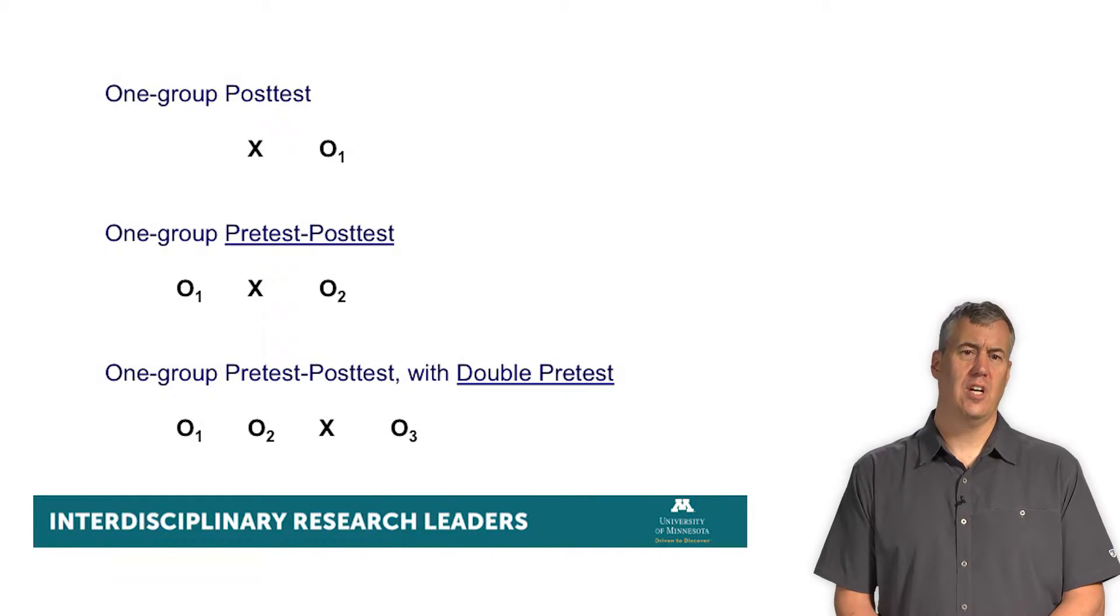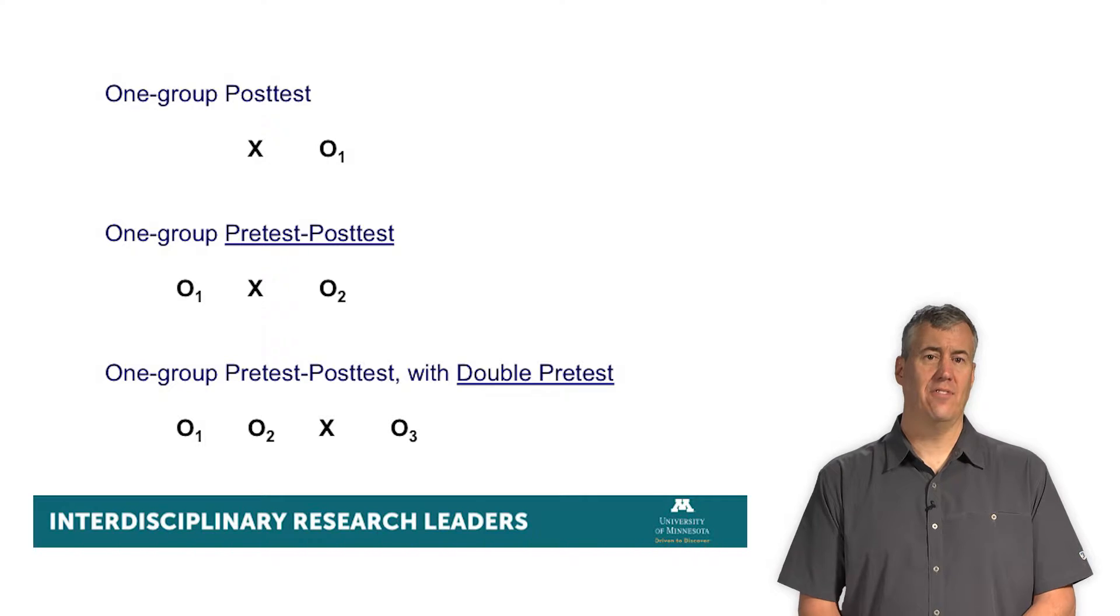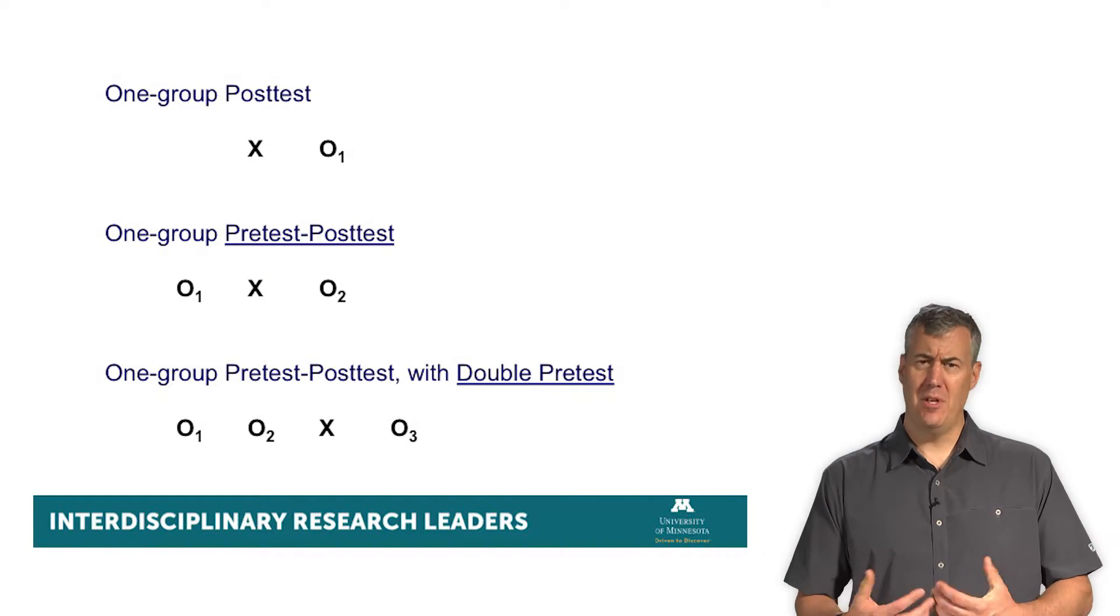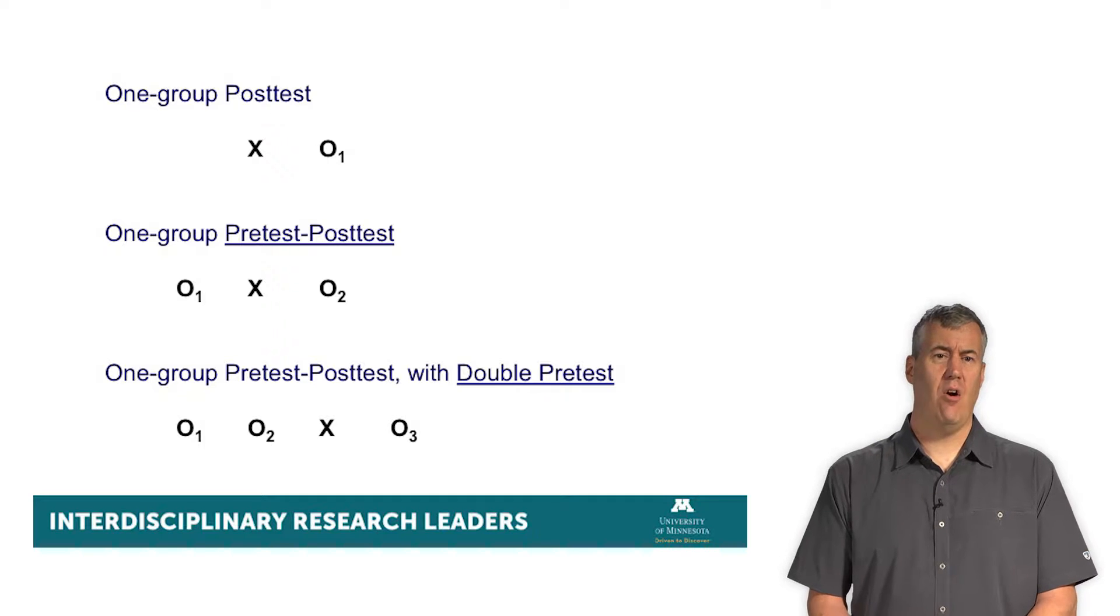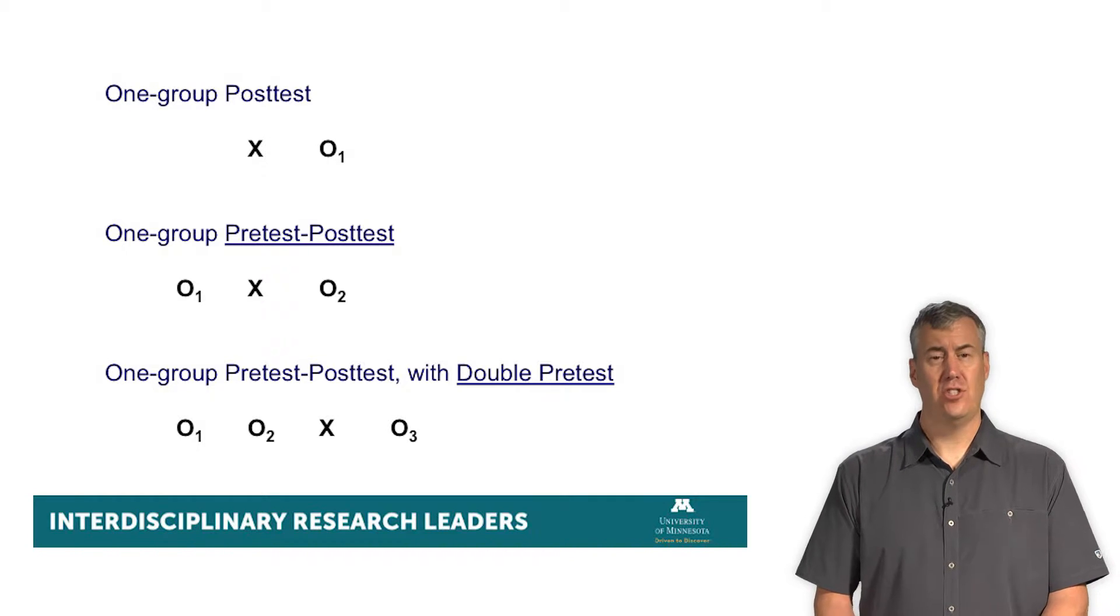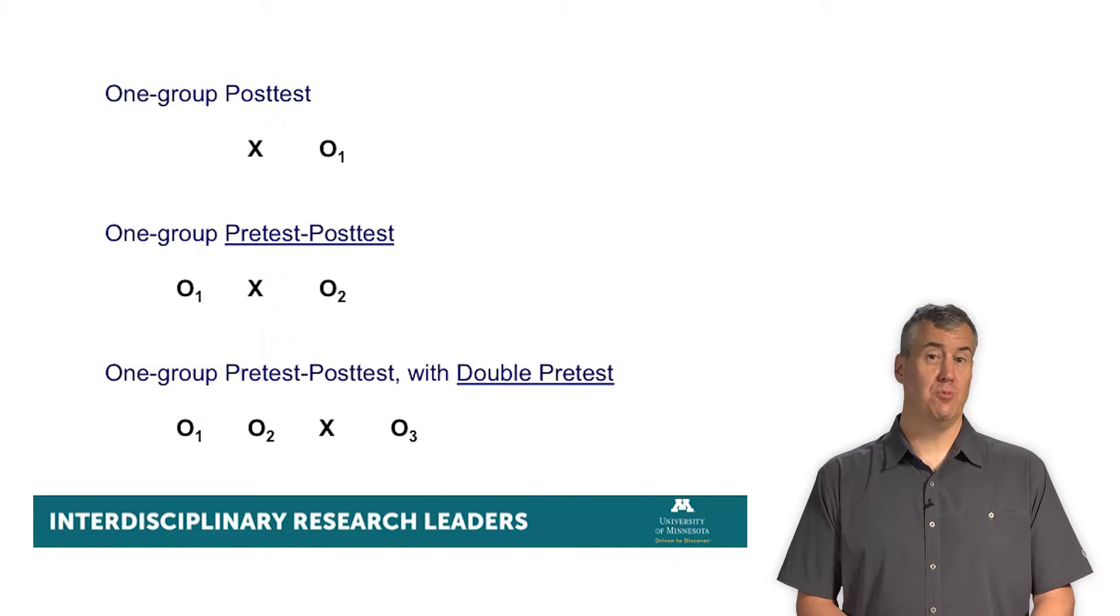There's several kinds of quasi-experimental designs. In this case, there's no control group. Here we just see we have some intervention and then O sub one, which is observation one. This is just a one group post-test only design. So maybe there's some policy change and we see what people's health is after that. Well you can imagine that this is hard to figure out whether that X, that change, caused the change in the outcome variable measured at observation one. We don't know what it was before.